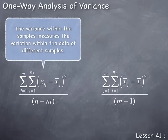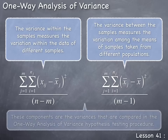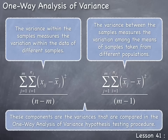The variance within the samples measures the variation within the data of different samples, and the variance between the samples measures the variation among the means of samples taken from the different populations. These components are the variances that are compared in the one-way analysis of variance hypothesis testing procedure.